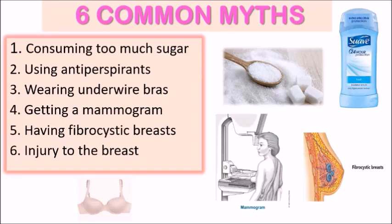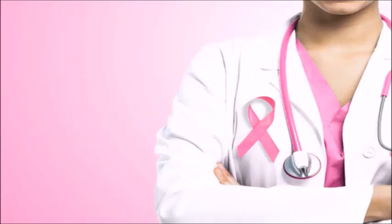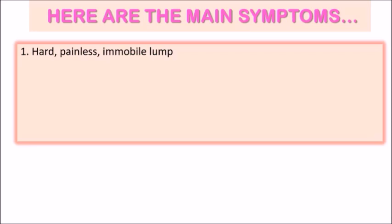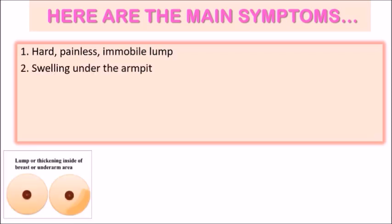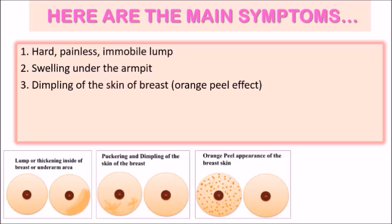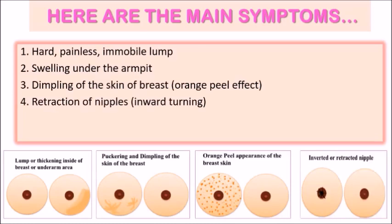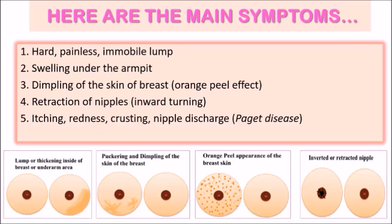What are the main signs and symptoms to look for when checking your breasts? Common symptoms include hard, painless, immobile lumps; swelling under the armpit; dimpling of the skin of the breast, which produces an orange peel effect; retraction of the nipples — that is the inward turning of the nipples; and itching, redness, crusting, and nipple discharge, which are common signs of Paget's disease of the breasts. If you notice any of these signs or symptoms, it is important to consult your doctor as soon as possible. Don't ignore these signs, but neither should you jump to conclusions — having a doctor examine and diagnose you is necessary.